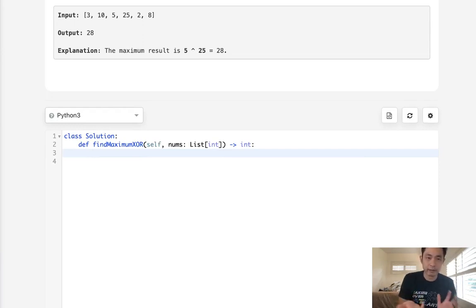If we do this in the naive approach we can do it in n-squared time pretty easily. We can just say for x in nums and then for y in nums, what is the max XOR?